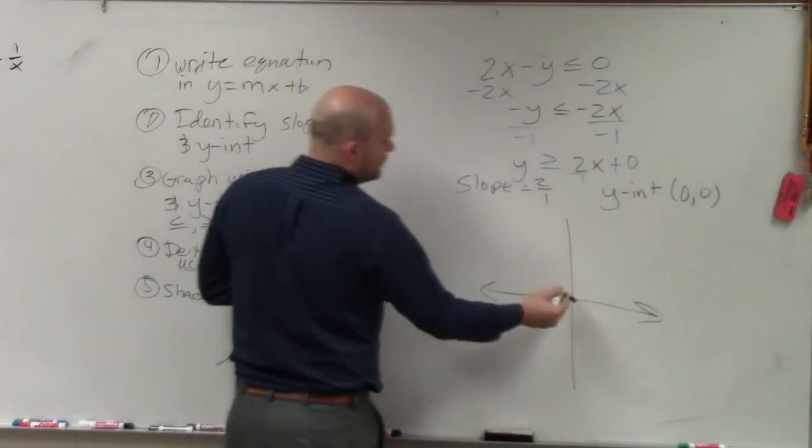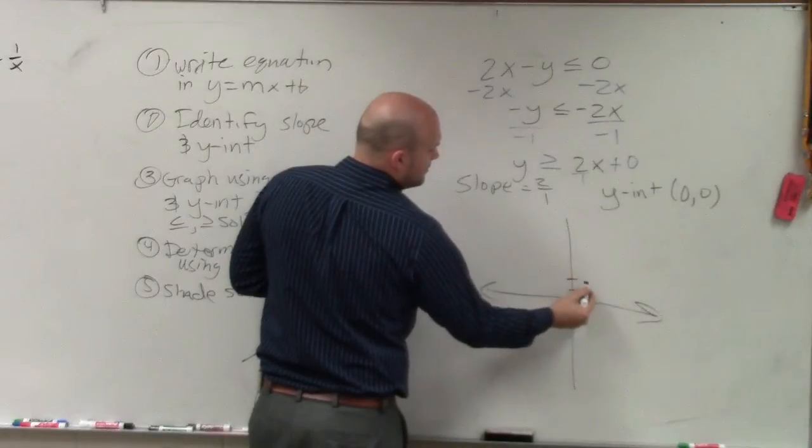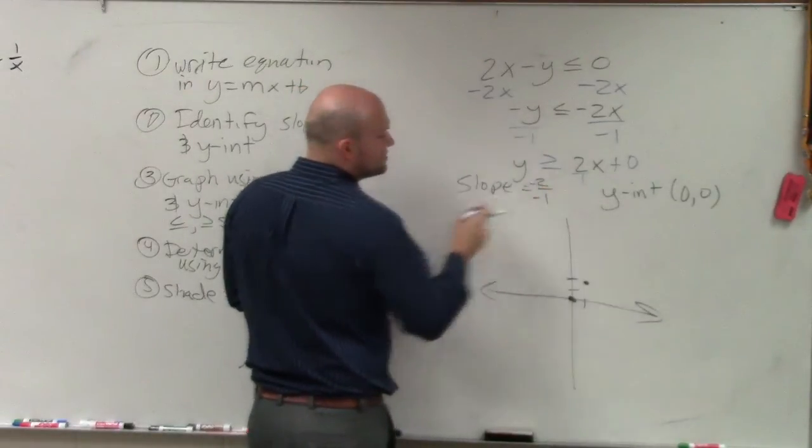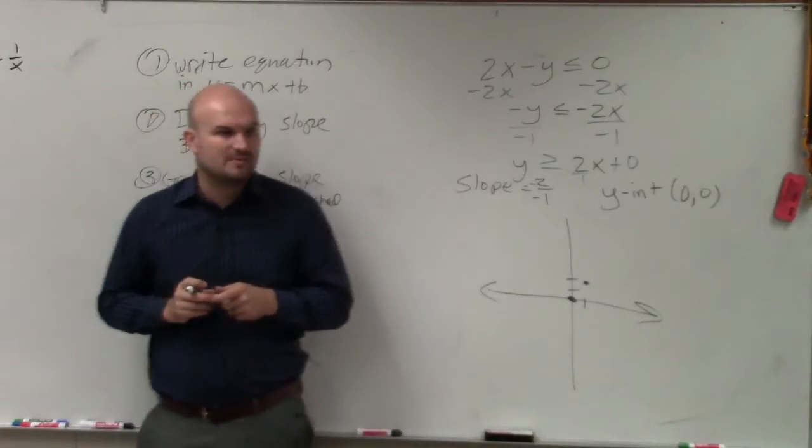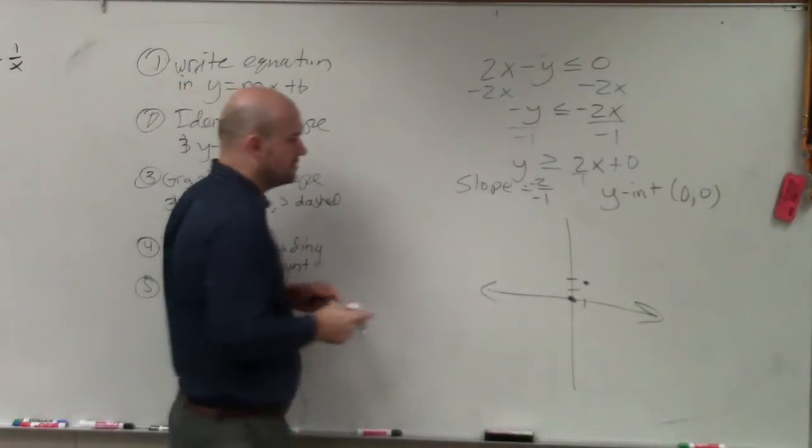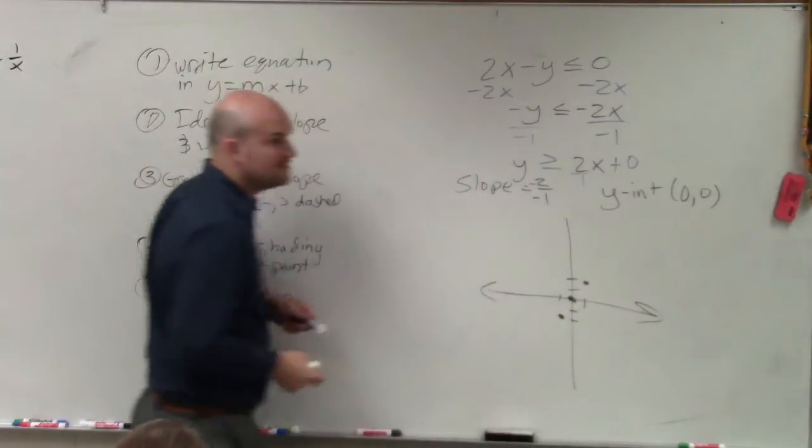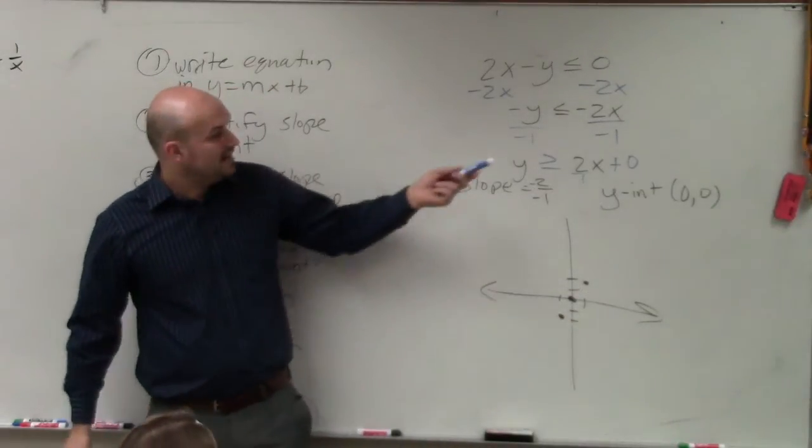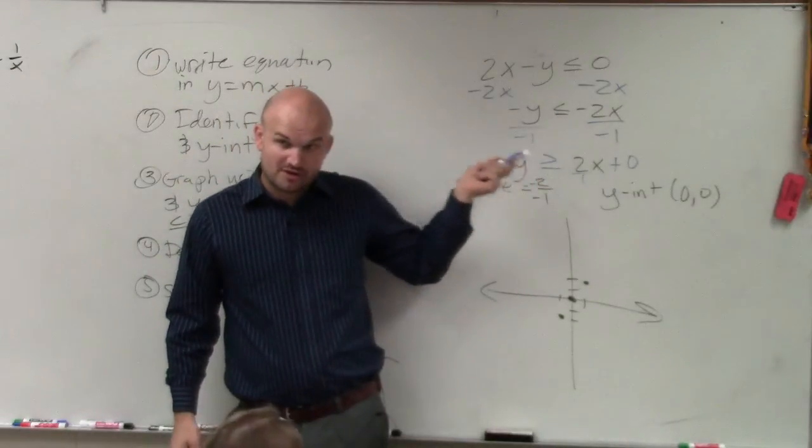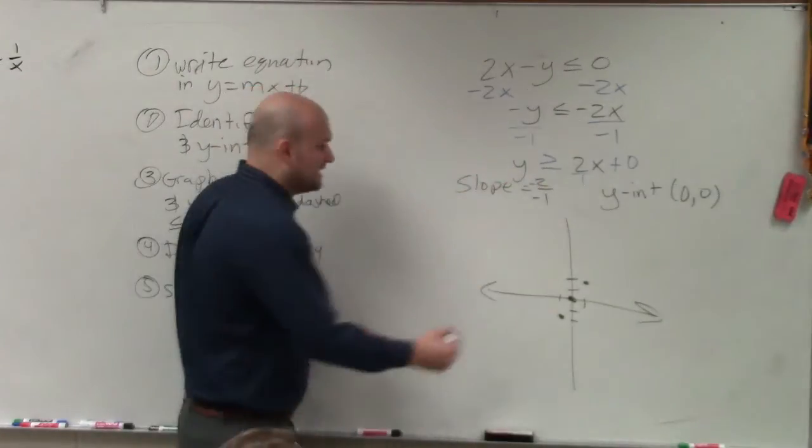I can go up 2 over 1. Or you could also do down 2 to the left one, right? Because negative 2 divided by negative 1 is positive 2. So I could also go down 2 to the left one. I didn't do that in the last example because the graph was about to fall off. Now, please notice this is greater than or equal to, so that's going to produce a solid line.